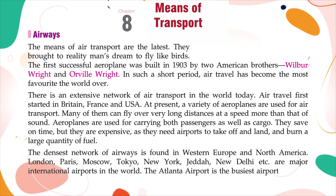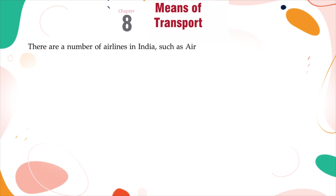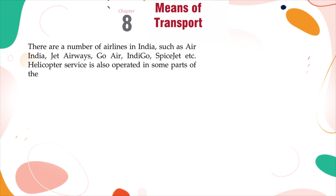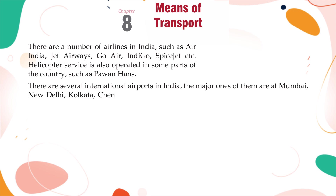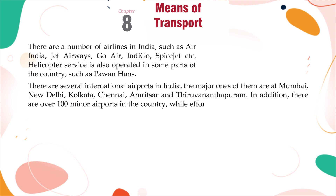The Atlanta airport is the busiest airport in terms of passenger traffic. There are a number of airlines in India such as Air India, Jet Airways, Go Air, IndiGo, Spice Jet, etc. Helicopter service is also operated in some parts of the country, such as Pawan Hans. There are several international airports in India. The major ones are at Mumbai, New Delhi, Kolkata, Chennai, Amritsar, and Thiruvananthapuram. In addition, there are over 100 minor airports in the country, while effort is being made to start airports in more cities.